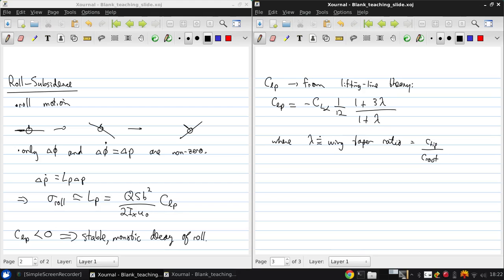So you can see that if the taper ratio is 1, such that c-tip and c-root are equal, then we get (1 plus 4) over (1 plus 2), so this factor becomes 2, and CLp is just CL alpha over 6.